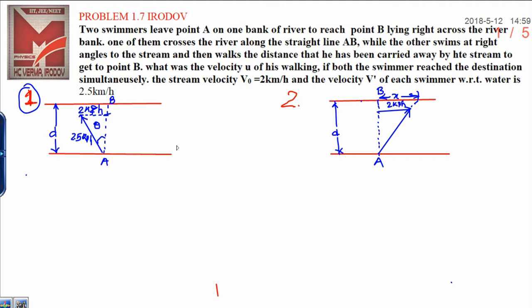Now in the first case, the first swimmer wanted to go from A to B by the straight way. In order to go the straight way, he has to move towards left so that by the stream of water he can reach at point B.